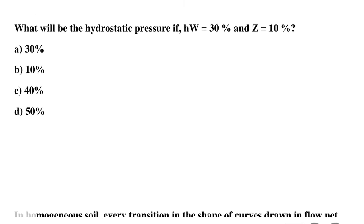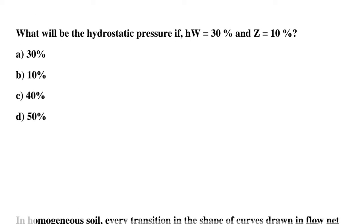Question 7: What will be the hydrostatic pressure if HW = 30 and Z = 10? Option A: 30, Option B: 10, Option C: 40, Option D: 50. The correct answer is Option C: 40.